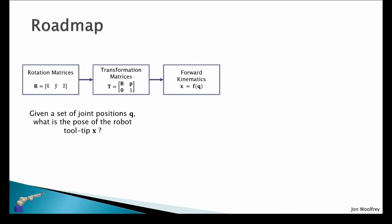Then we move on to forward kinematics, so given a set of joint positions Q, what is the pose of the robot tooltip X?